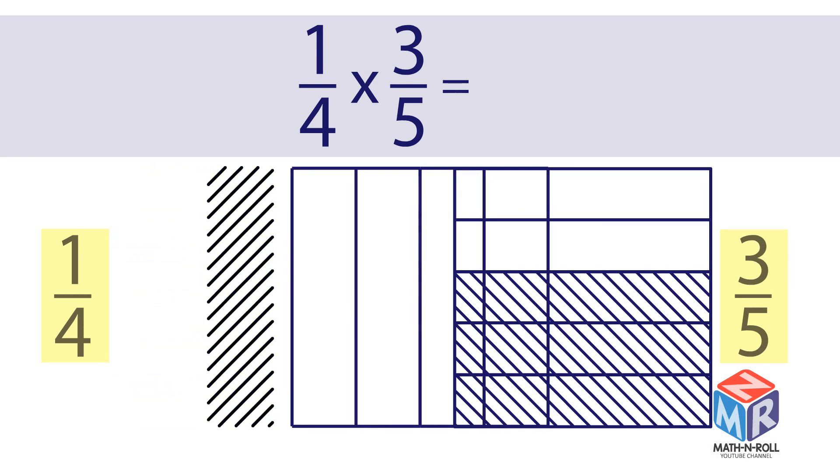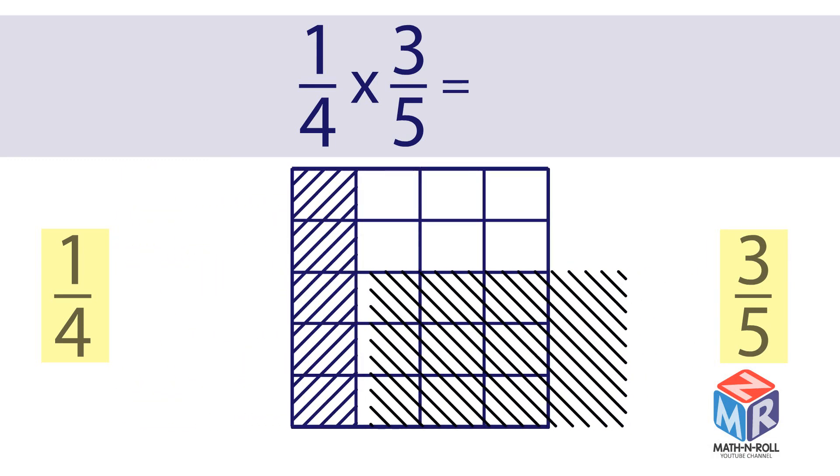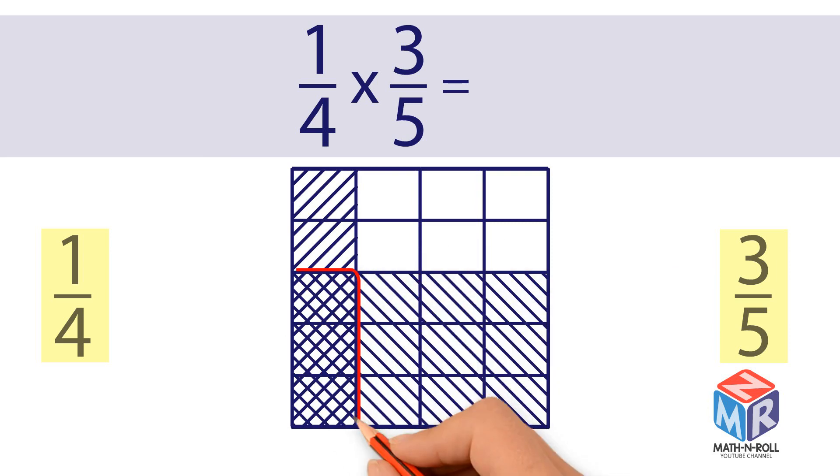Combine these models together. The overlapping region represents the answer. Three out of 20 units are shaded. The answer is 3 over 20.